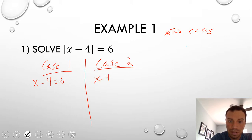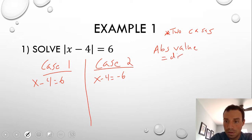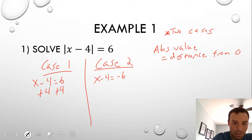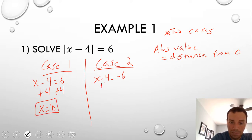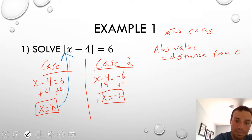So we have x minus 4 equals negative 6. What is absolute value? Absolute value is the distance from zero. To solve, let's start by adding 4 to both sides. For case 1: x equals 10. For case 2: x equals negative 2. If you want to check your work, take both answers and plug them back in.